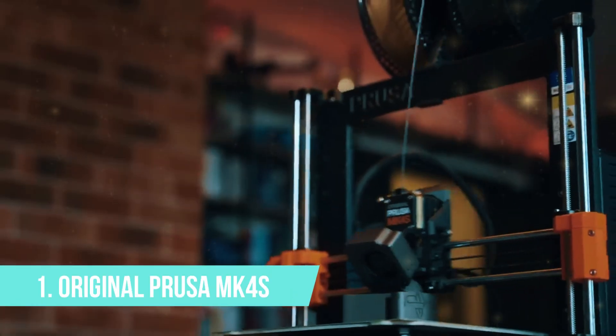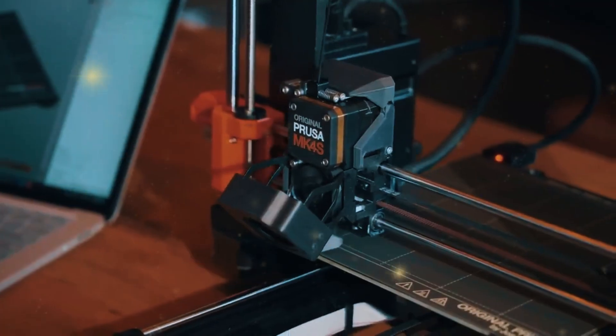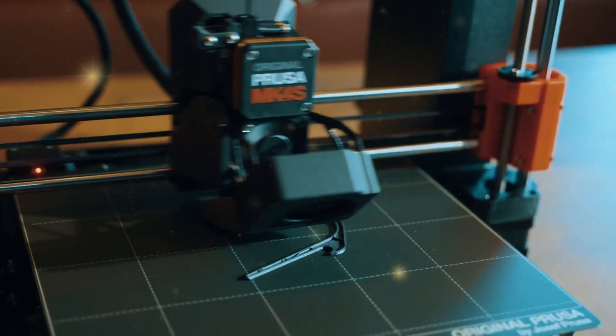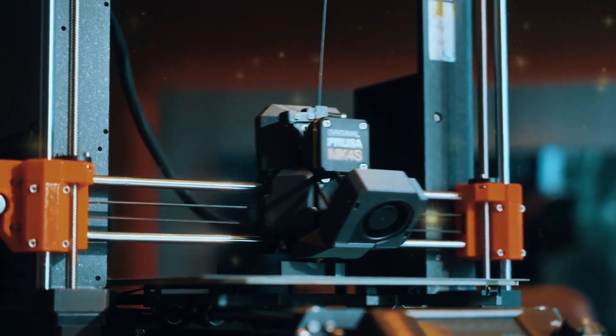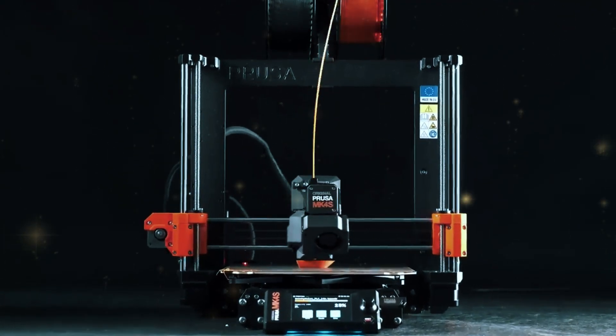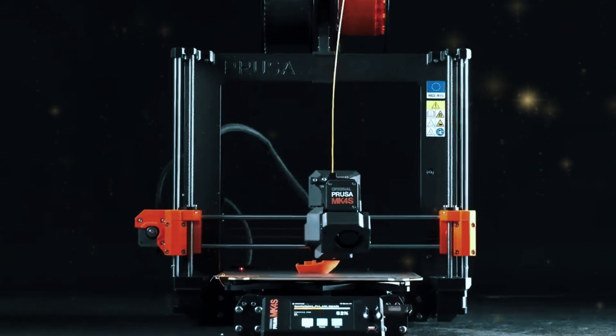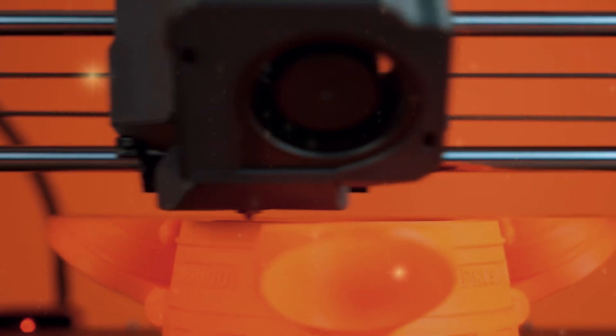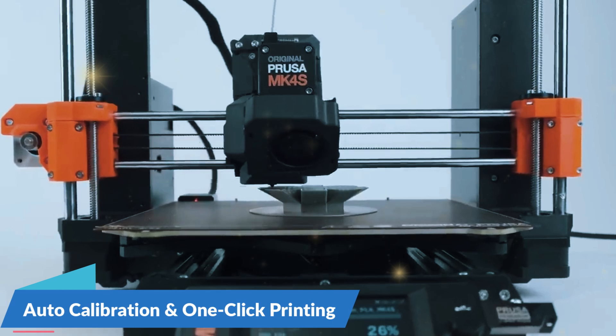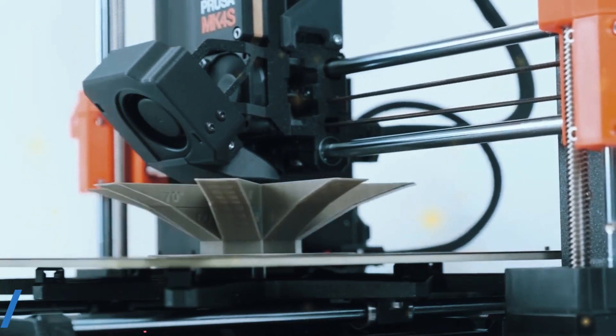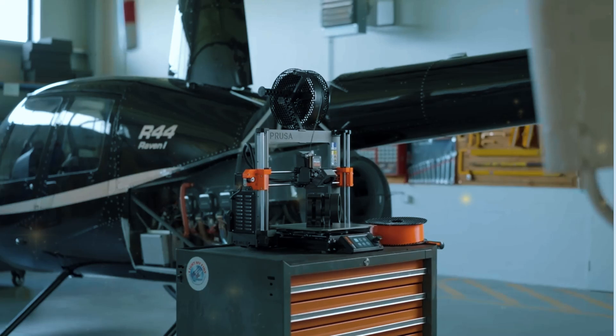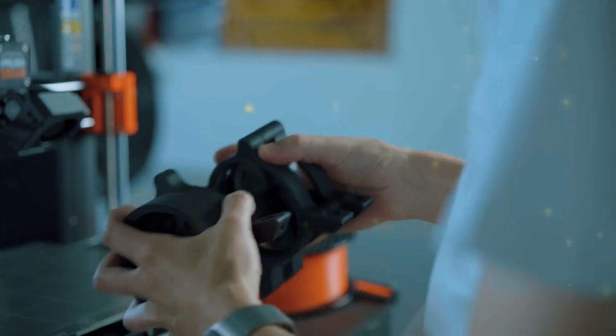Number 1: Original Prusa MK4S. Topping our list is the Original Prusa MK4S, an advanced 3D printer that strikes the perfect balance between speed, reliability, and ease of use. Whether you're a beginner or a seasoned 3D printing enthusiast, the MK4S is designed to deliver high-quality results with minimal effort. It features automatic calibration and one-click printing, which means you don't have to worry about tedious manual adjustments like bed leveling. This makes it a great choice for users at all experience levels.